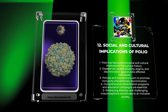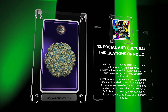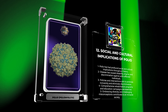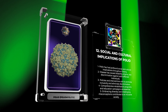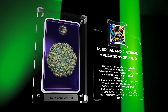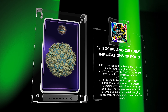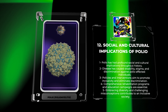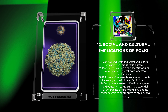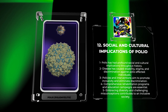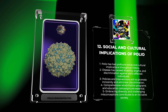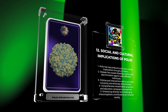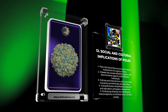Policies and interventions targeting the social and cultural impact of polio aim to promote inclusivity, eliminate discrimination, and enhance the quality of life for individuals with disabilities. Comprehensive rehabilitation programs, education campaigns, and legislation promoting accessibility are essential components of such interventions. Embracing diversity, fostering community engagement, and challenging societal misconceptions surrounding polio contribute to building an inclusive society that supports the rights and well-being of all individuals.